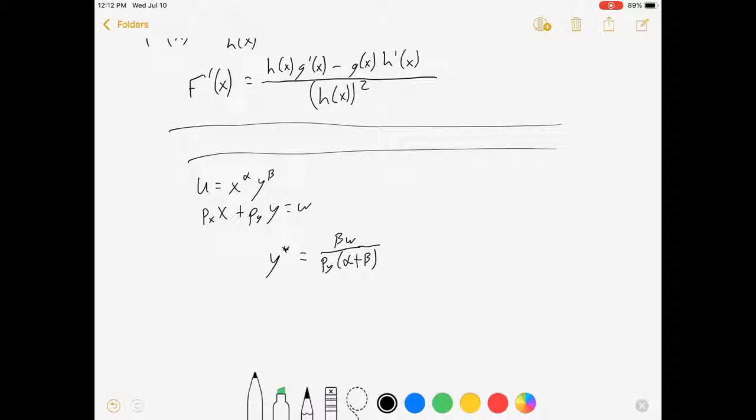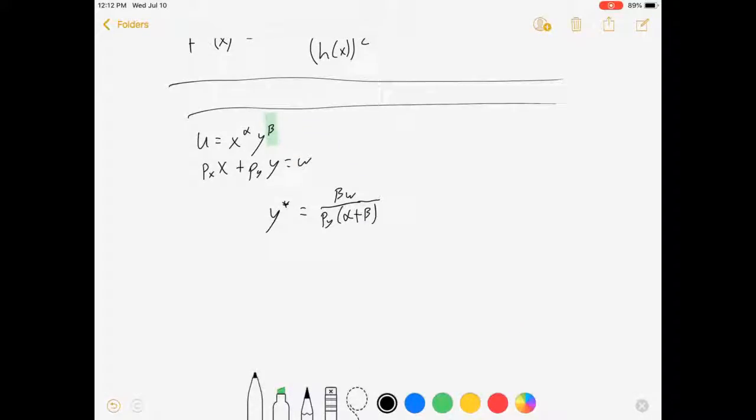Now, what if I am interested in this beta? And specifically, what if I am interested in the rate at which y star changes when beta changes? So, dy star d beta.